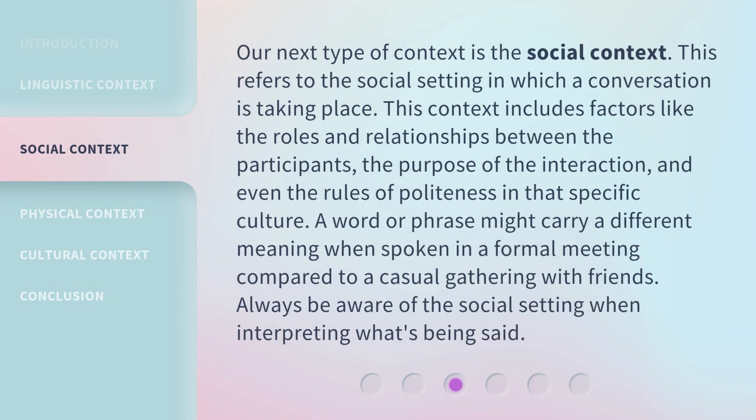Our next type of context is the social context. This refers to the social setting in which a conversation is taking place, including factors like the roles and relationships between the participants, the purpose of the interaction, and even the rules of politeness in that specific culture. A word or phrase might carry a different meaning when spoken in a formal meeting compared to a casual gathering with friends. Always be aware of the social setting when interpreting what's being said.